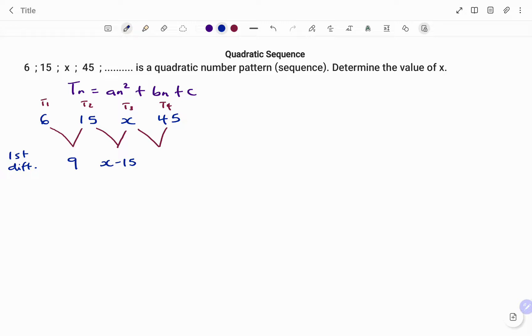Then we have x minus 15, and the last difference is 45 minus x. Because we don't know the value of x, we're going to leave that as an expression, 45 minus x.